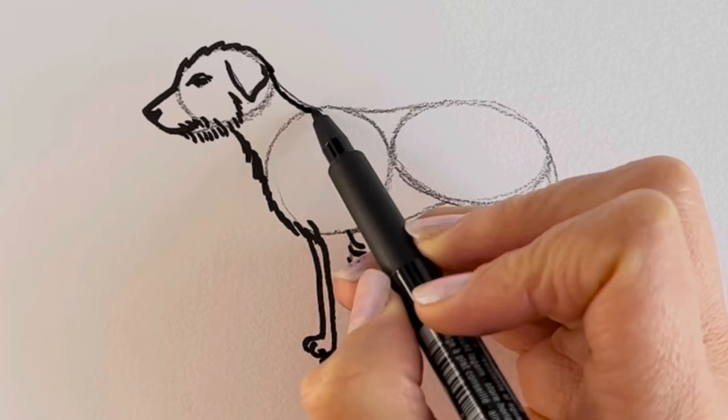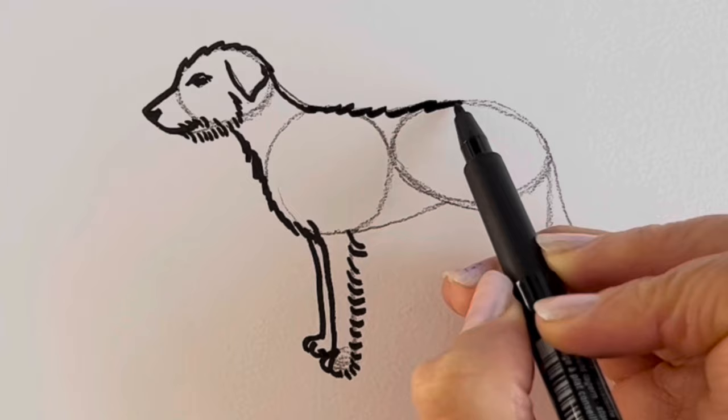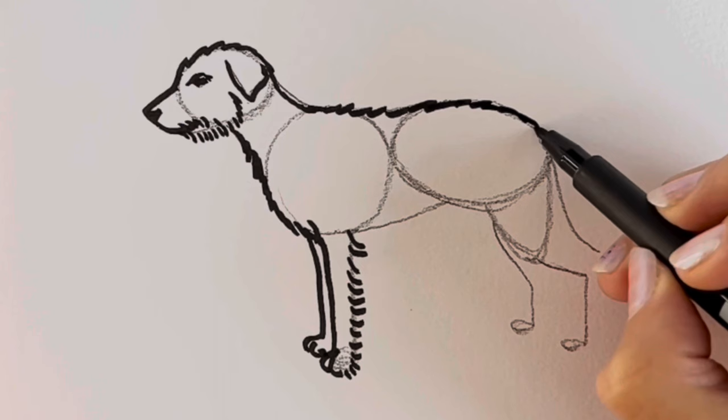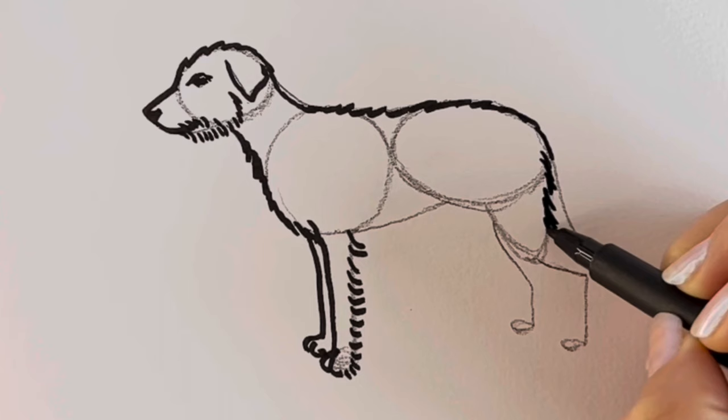Now for the back. So we're going to come round down here. Remember to do these kind of flicky lines just to show that it's very furry. There we go. Coming down. So they usually have a life expectancy between 12 and 15 years.